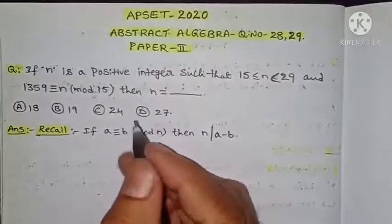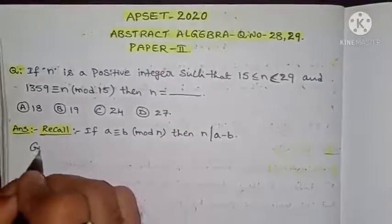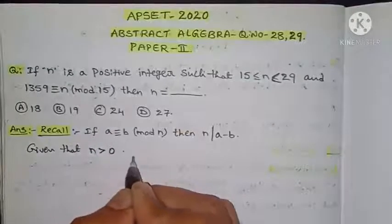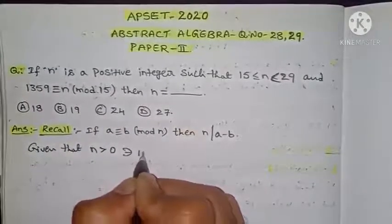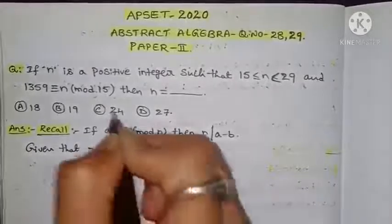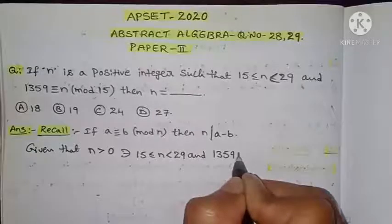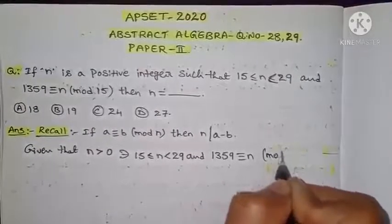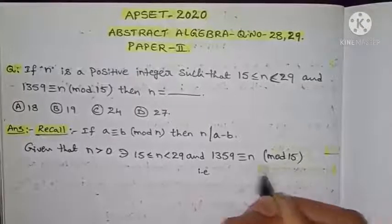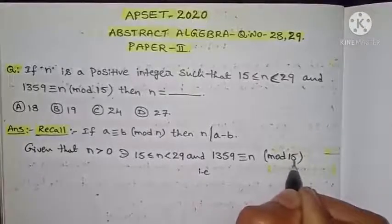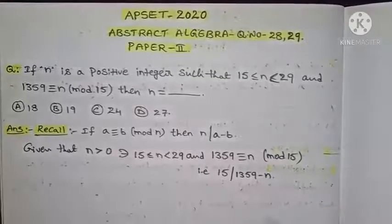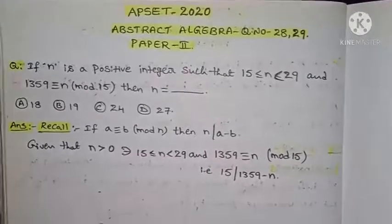Coming to the solution: given that n is a positive integer, meaning n is greater than zero, such that 15 ≤ n < 29. The relation is 1359 is congruent to n modulo 15. That means 15 divides the difference (1359 minus n). So we have to find the value of n.